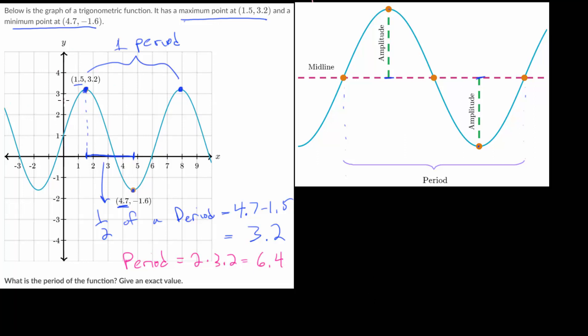And we can visually check this by determining what the x coordinate of the next maximum point should be by taking 1.5 and adding one period to that, 6.4. And we would get 7.9. And we can see that this maximum point here would roughly have an x value right at 7.9.